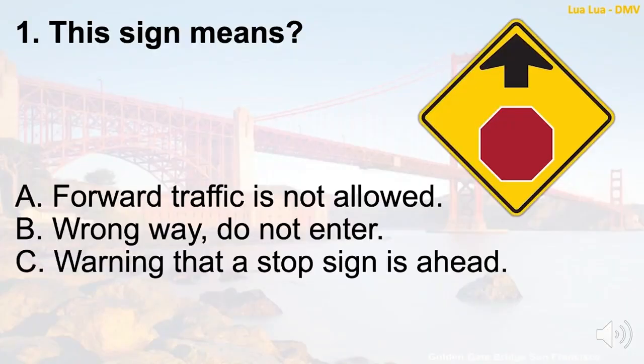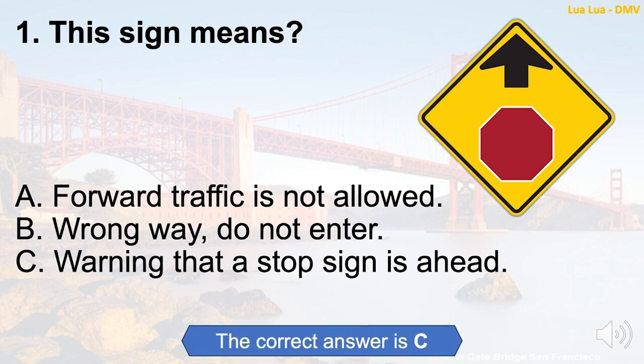Question 1: This sign means — A. Forward traffic is not allowed. B. Wrong way, do not enter. C. Warning that a stop sign is ahead. The correct answer is C: Warning that a stop sign is ahead.